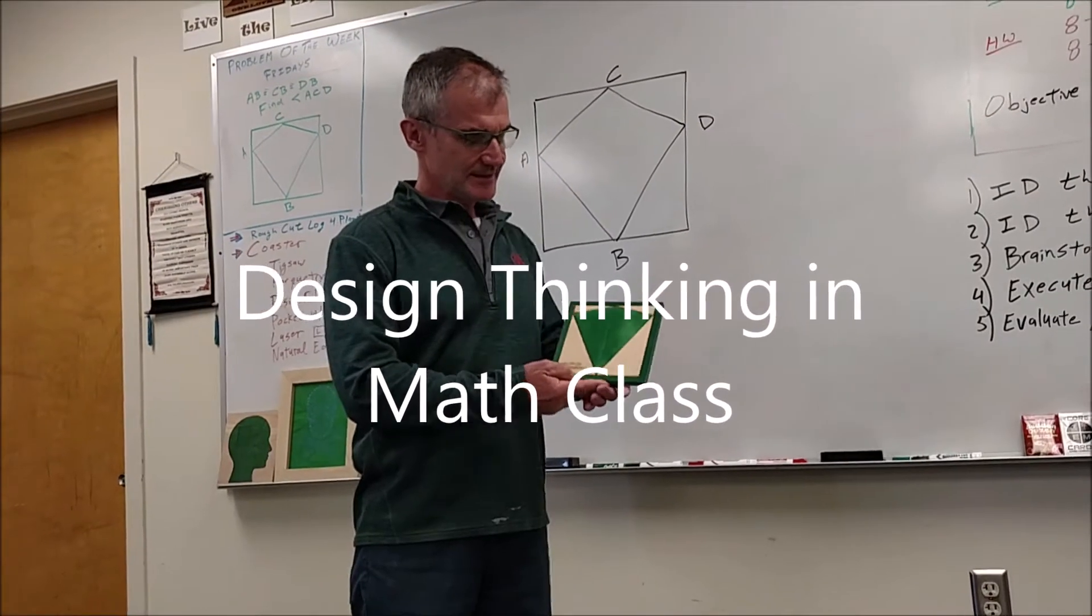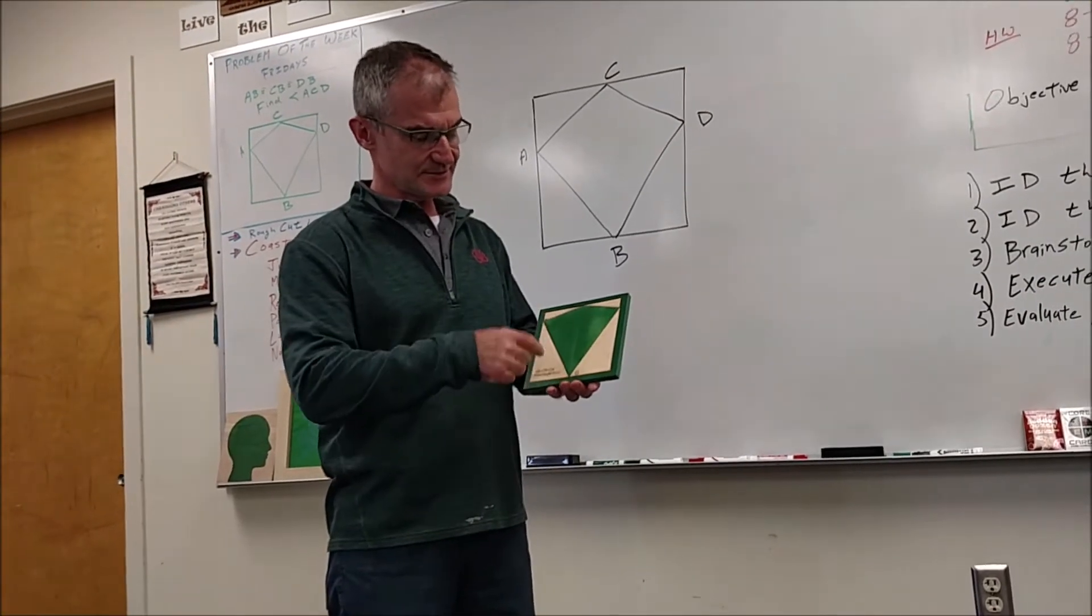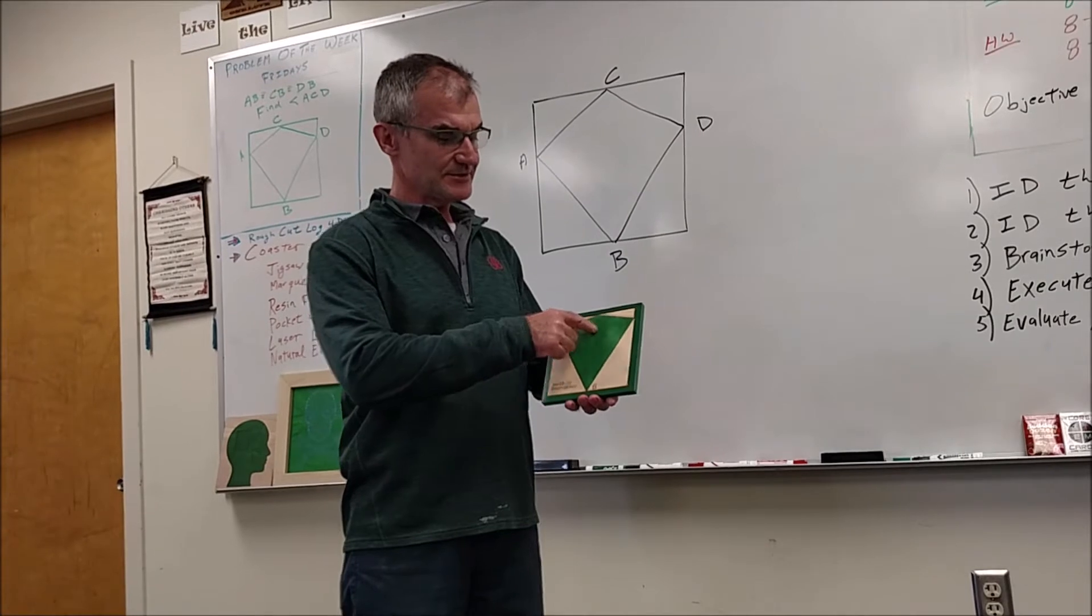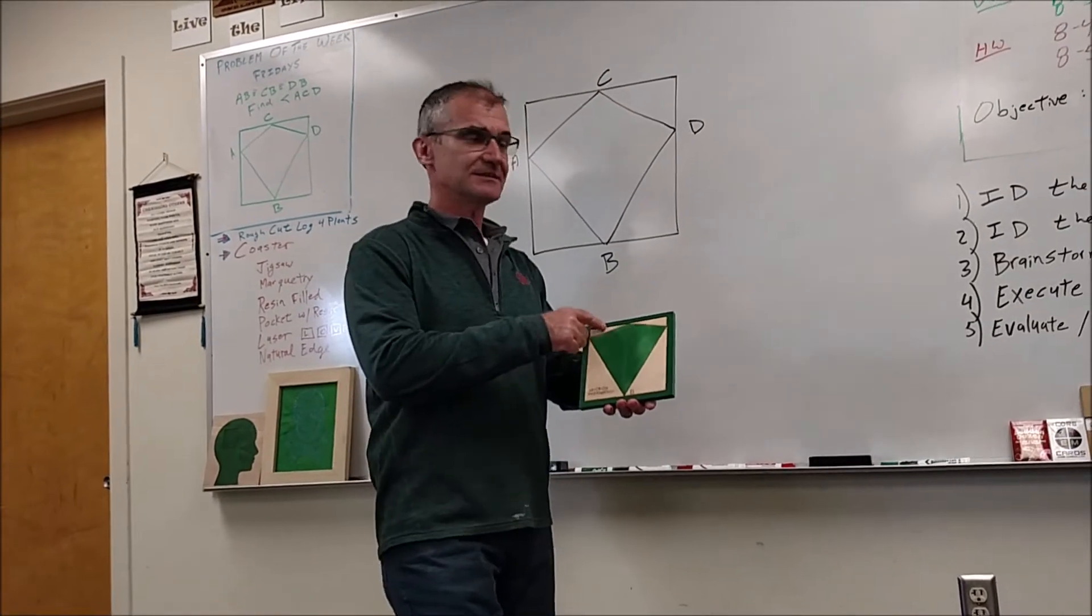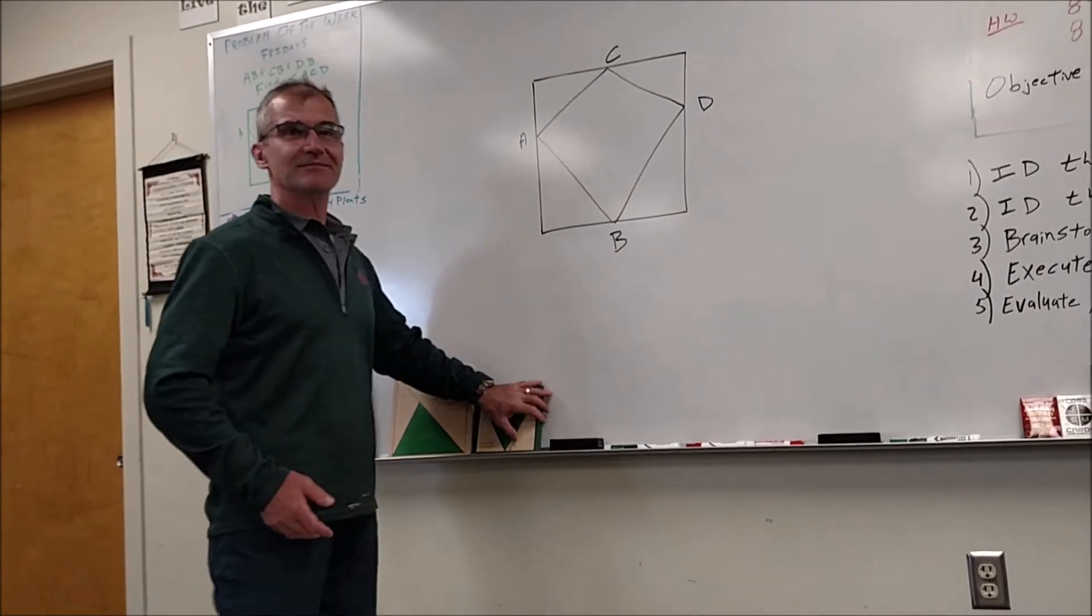Okay, here's the problem of the week. You're given that this line, this line, and this line are congruent. It's inside of a square and you're trying to find the measure of angle ACD, this angle right here. So how many people have the answer?